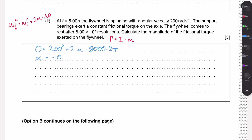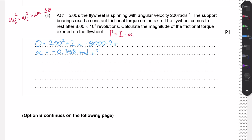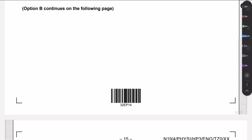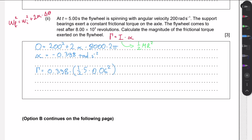Solving for α gives −0.398 rad/s² (negative indicating deceleration). We then compute the frictional torque using τ = I × α, with I = ½ × 5 × (0.06)² — again using the full outer radius since friction decelerates the entire system. This gives a frictional torque of 3.58 × 10⁻³ N·m.